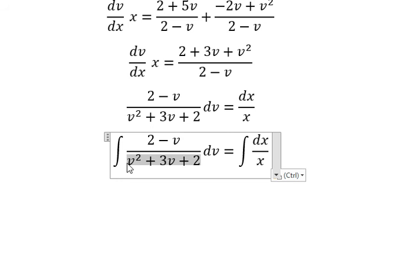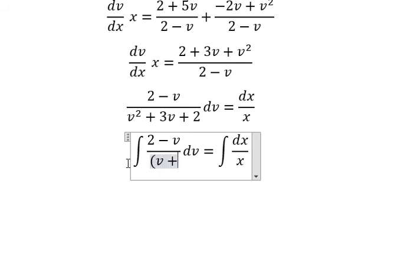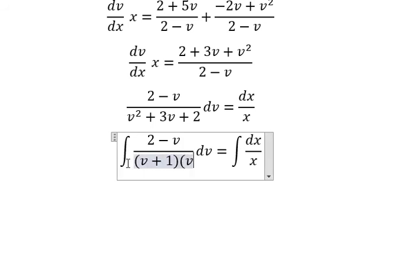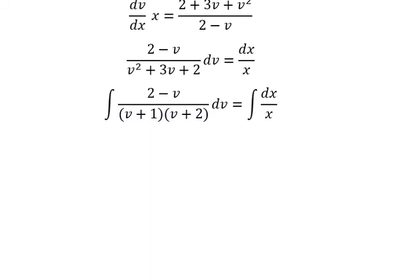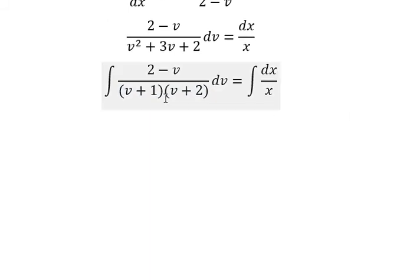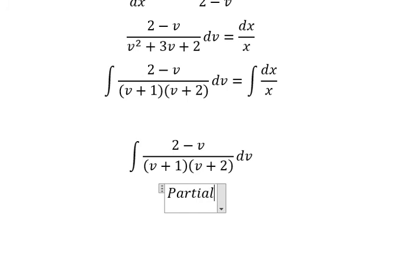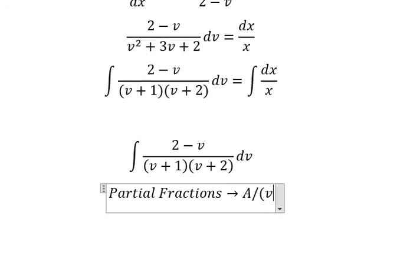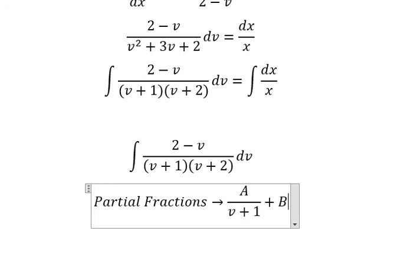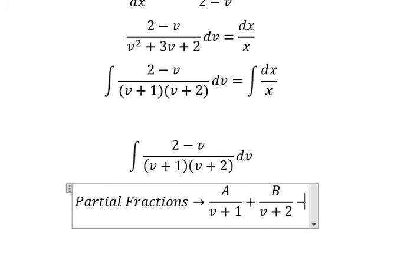About this one we can put v plus 1 multiplied by v plus 2. Now in this one I can do partial fractions. So I will put capital A over v plus 1, capital B over v plus 2. Later we do common denominator.